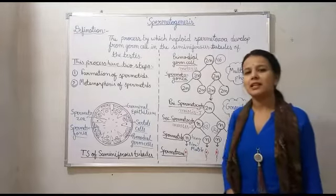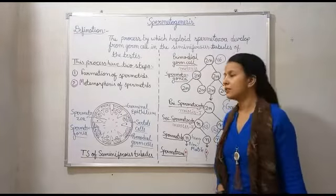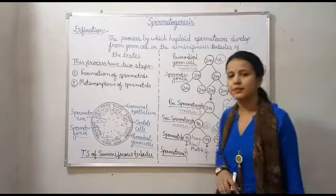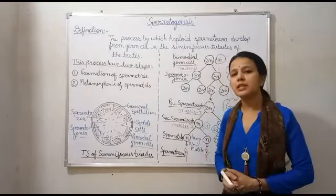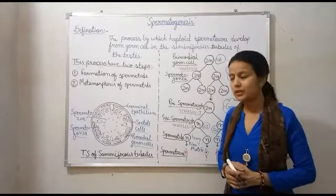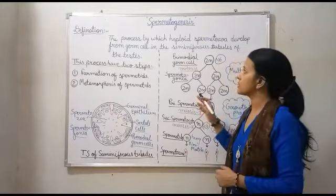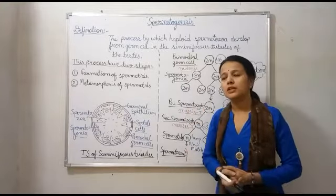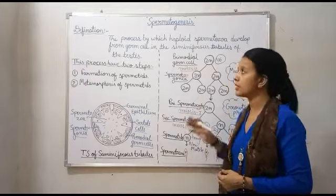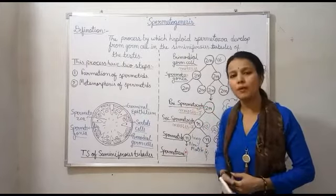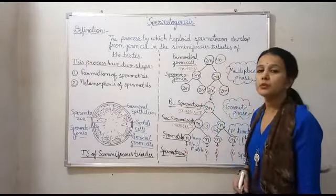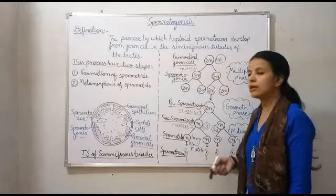Hello students, let's start with today's topic. Today's topic is spermatogenesis. Last time we studied gametogenesis. As you know, there are two parts of gametogenesis: number one is spermatogenesis, which is the formation of sperm, and another one is oogenesis, which is the formation of ova in females.